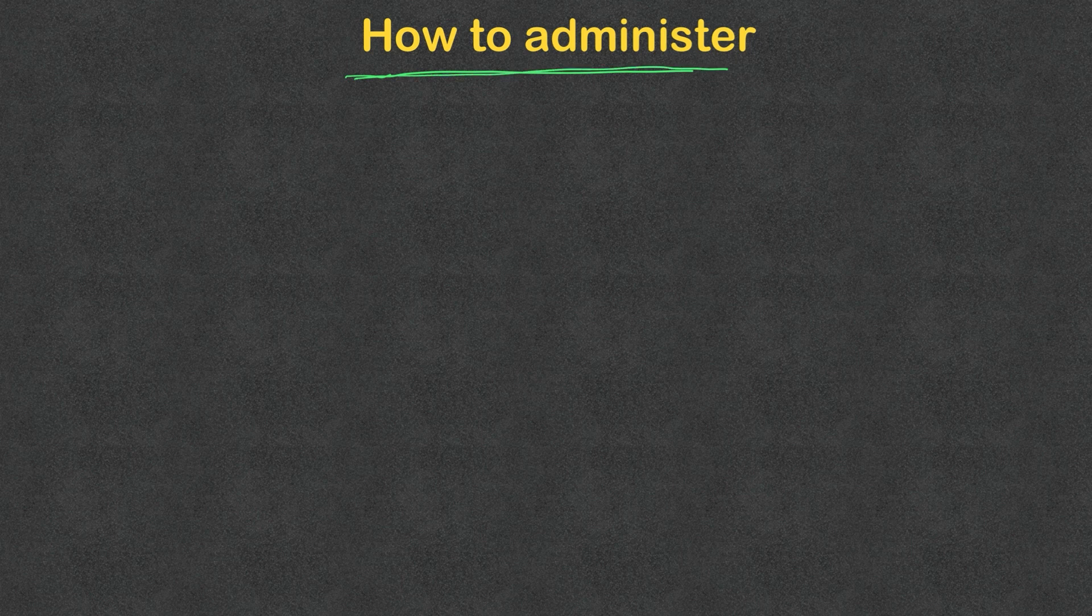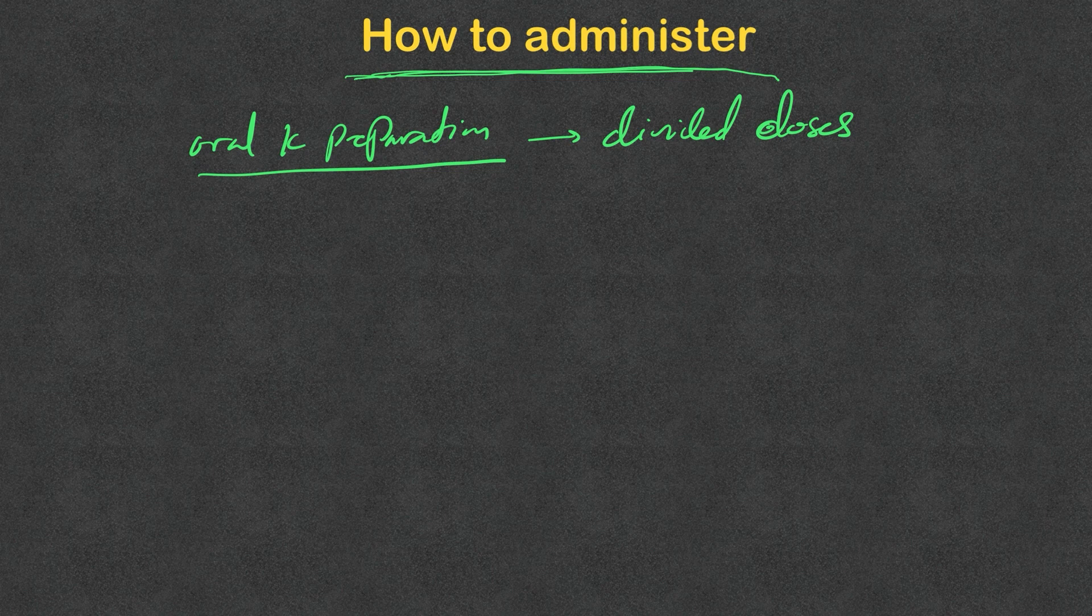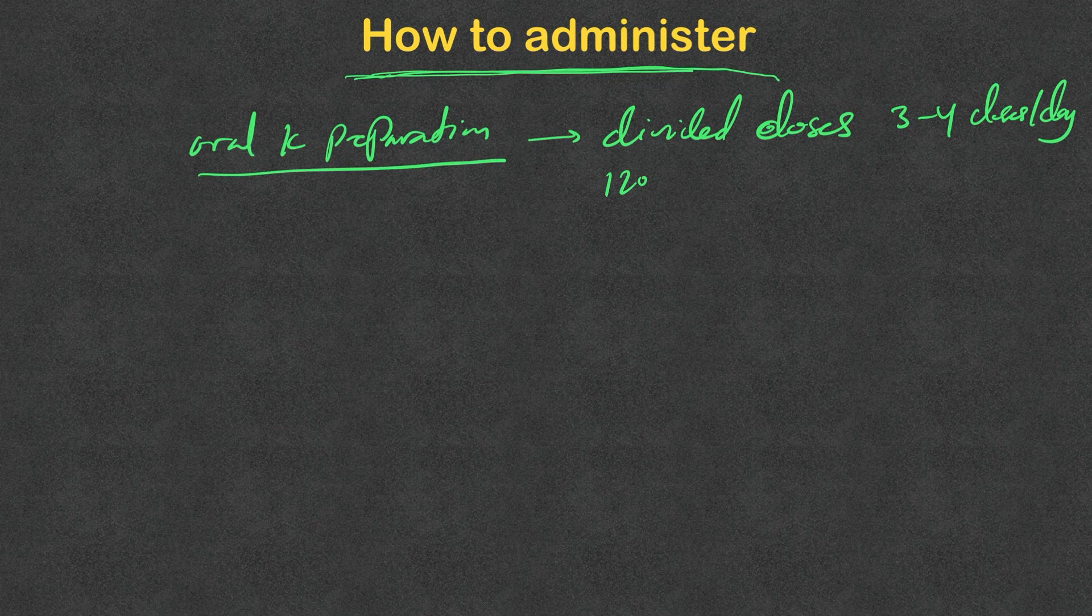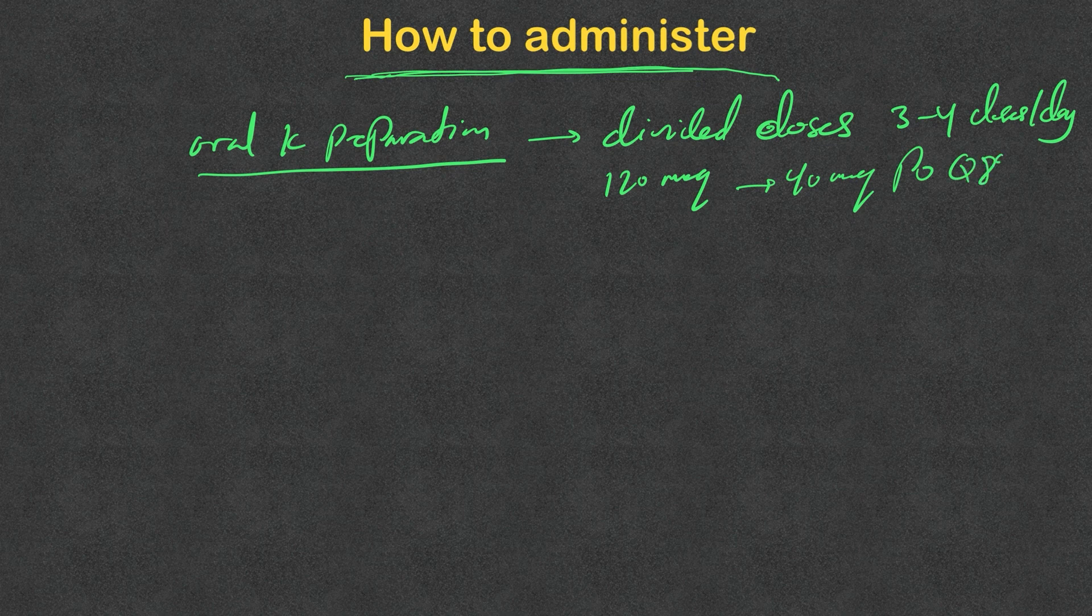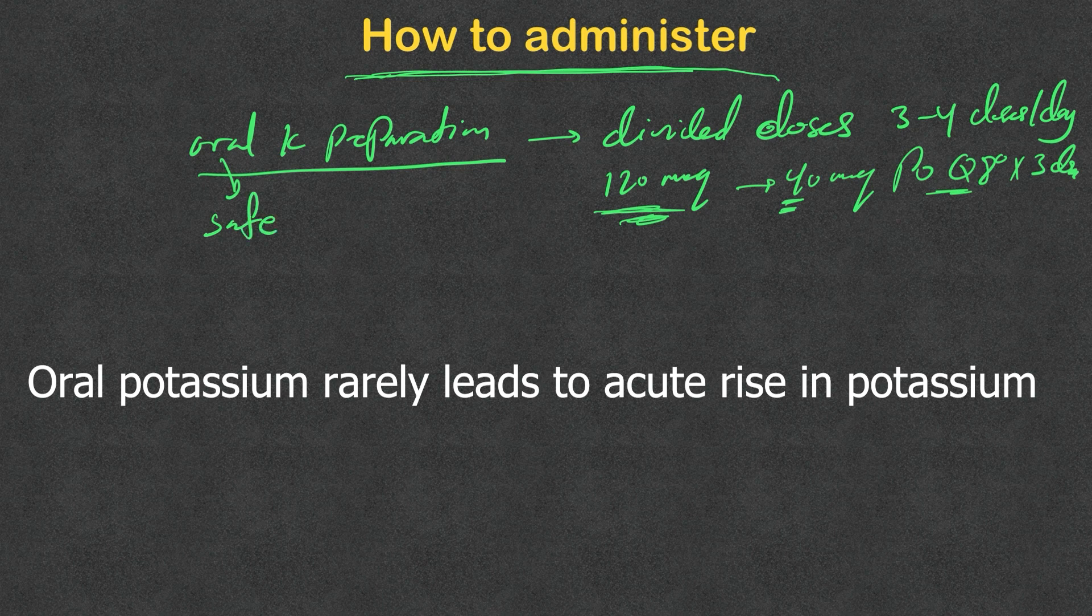We decided the amount of deficits and we decided what kind of potassium preparation we're going to use. How do we administer that? For oral potassium, we give the total deficit in divided doses, preferably three to four doses a day. If the deficit is 120 milliequivalents, I can give this as 40 milliequivalents PO q8 hours times three doses, for example. Remember that oral potassium is safe and rarely leads to hyperkalemia compared to IV potassium.